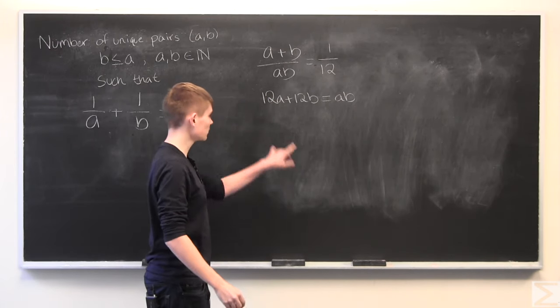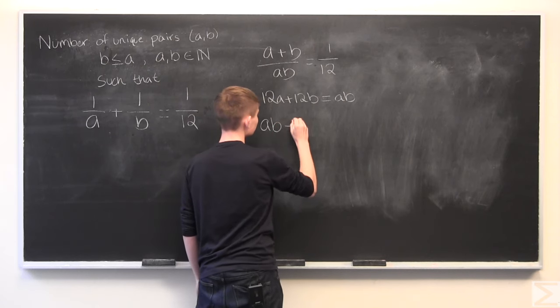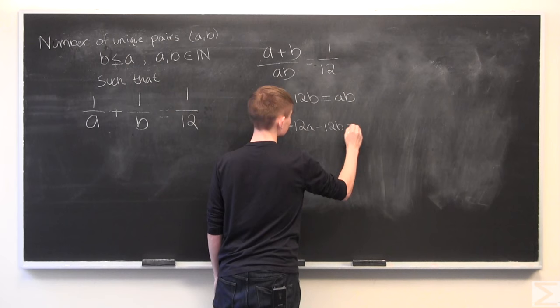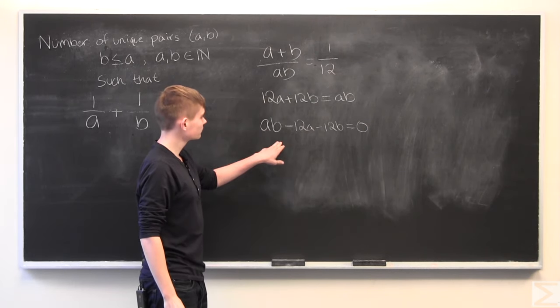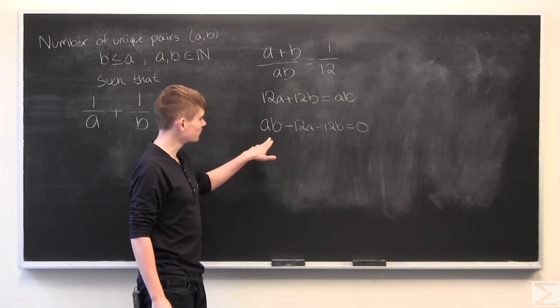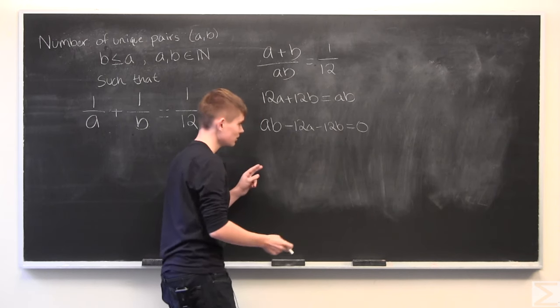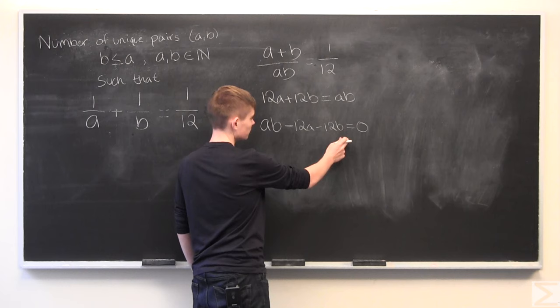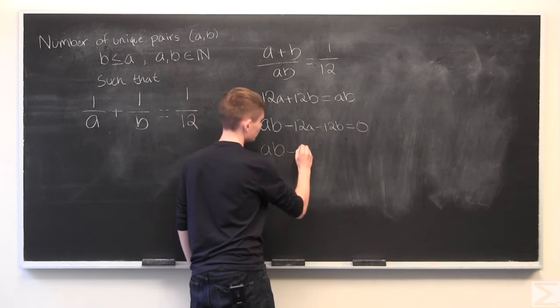And we can bring them all to the same side. Now what we can do is complete the square, which may seem weird since there's no squared term, but I'll add 144 to each side and you'll see what happens.